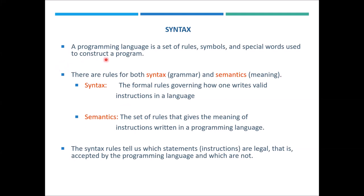When we create a program, there are two things that are very important. First of all, we discuss syntax. When we talk about normal language, there is something called the grammar of the language, and there are some things that give meaning to a sentence. We implement a similar concept here. When we write code, there are formal rules that we follow through the commands or statements.